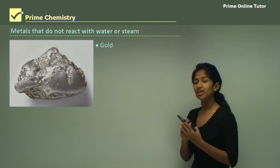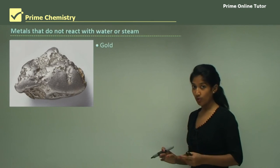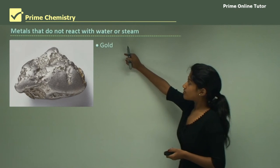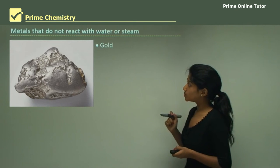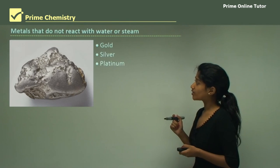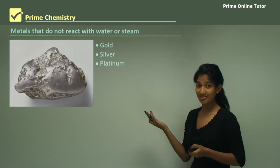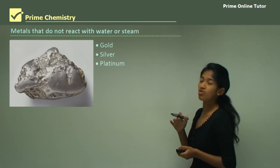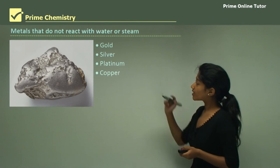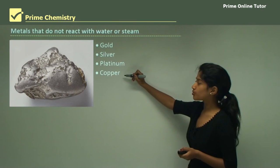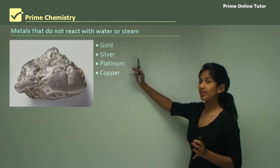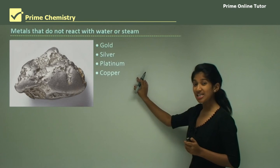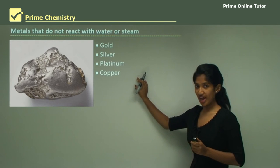Some metals don't react at all — they are called inert metals. Gold, silver, and platinum don't react with anything, including water. Copper is also one that doesn't react with water or steam. They are very inert and very unreactive.